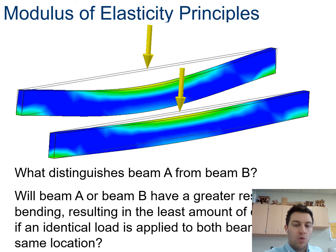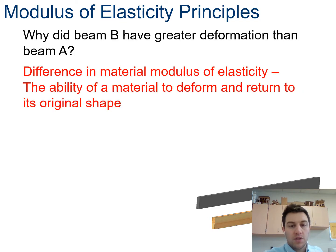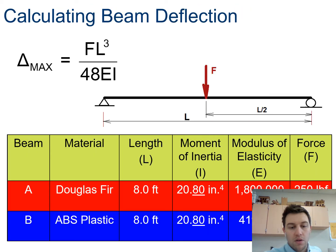So if you look at the modulus of elasticity of our wood Douglas fir, it is 1.8 million psi compared to 419,000 psi for the plastic. Now when we know both moment of inertia and modulus of elasticity, that's when we can start estimating and calculating how much these beams are going to deflect.